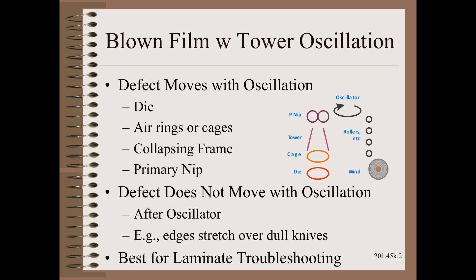Knowing that the blown film defects move sideways at a predictable rate would allow us, for example, to troubleshoot laminates. Any defect in the final product that moves sideways at this rate belongs to the blown film, and defects that are relatively stationary within a supply roll belong to one of the other plies.